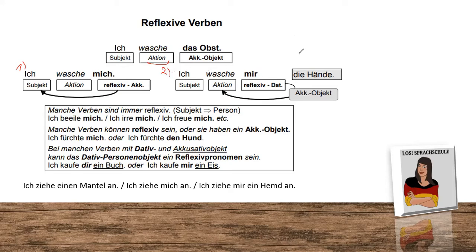The second option for a reflexive action is: 'Ich wasche mir die Hände' — I wash my hands. To emphasize that I am washing my hands, we have a reflection, but it is in Dativ. The object following is again accusative. Some actions can reflect the subject 100% like 'Ich bürste mich' — I brush myself.